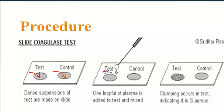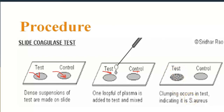Only add plasma to the test suspension; no plasma is added to the control suspension. The control helps differentiate any granular appearance of the organism from true coagulase clumping. Look for clumping of the organisms within 10 seconds. Clumping in the test suspension indicates that the isolate is Staphylococcus aureus.